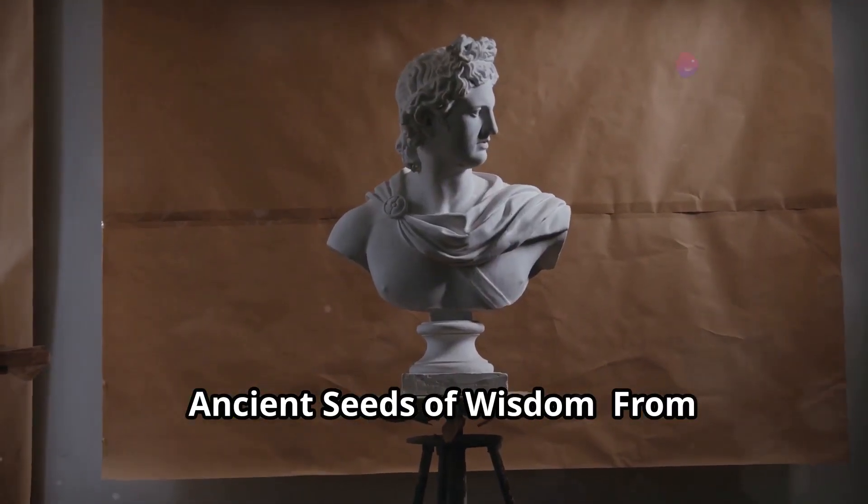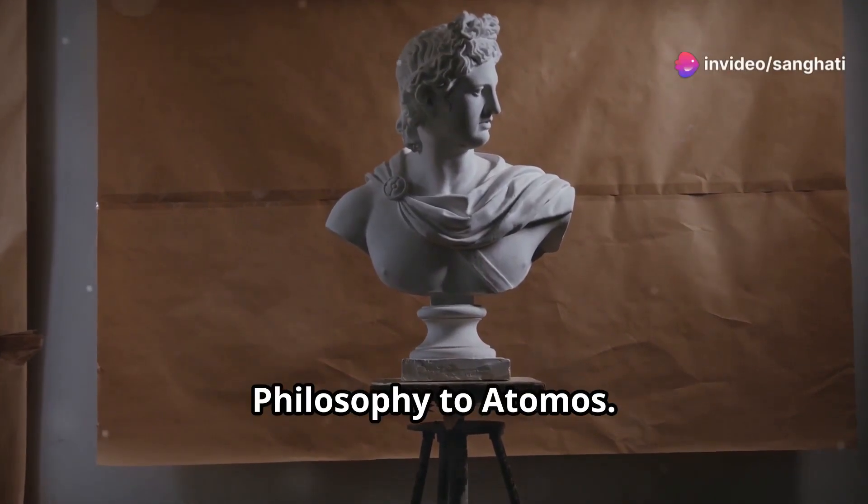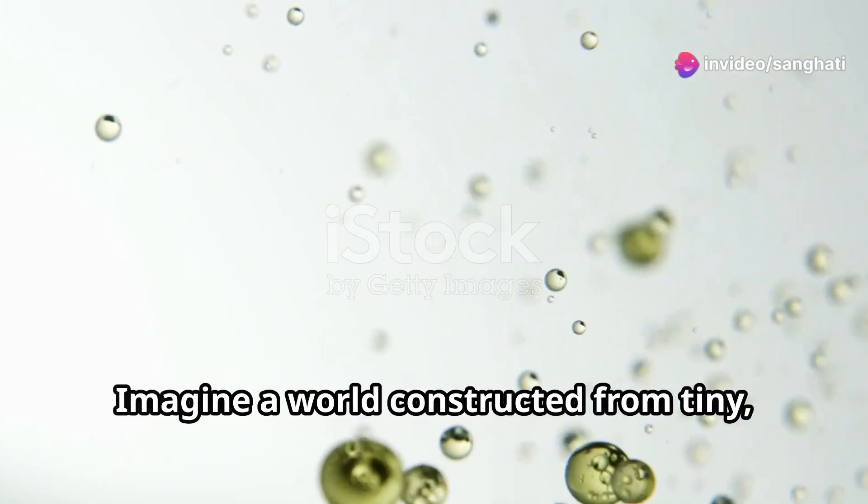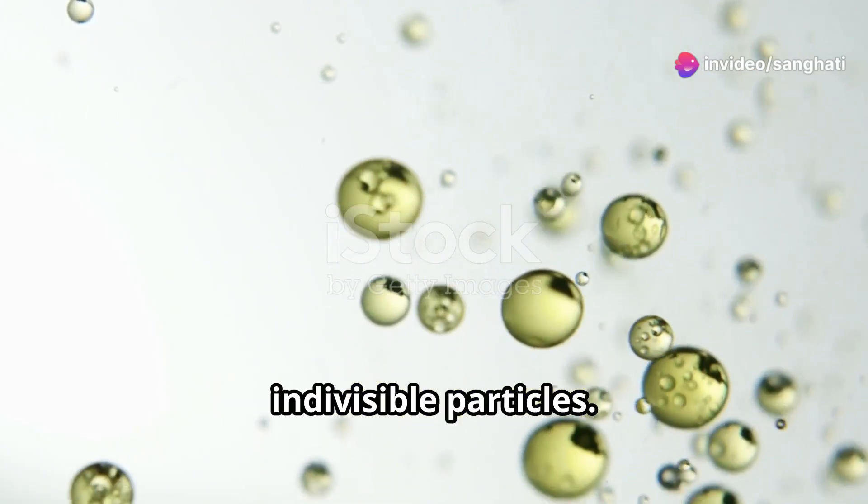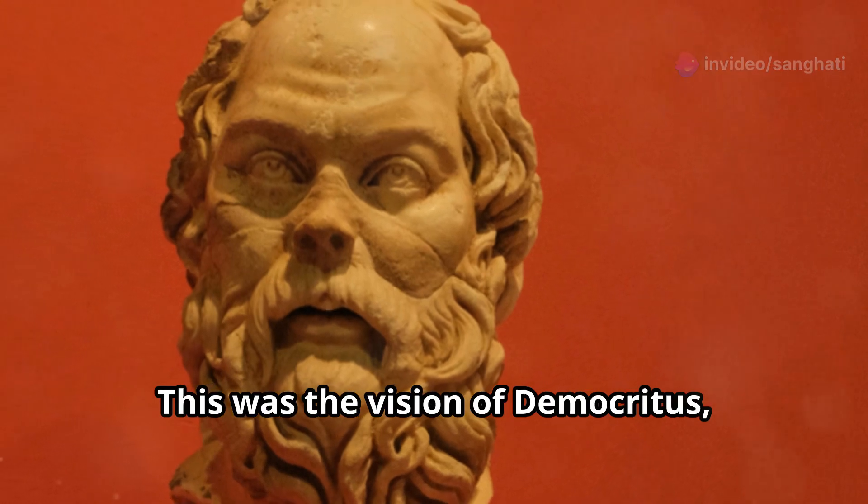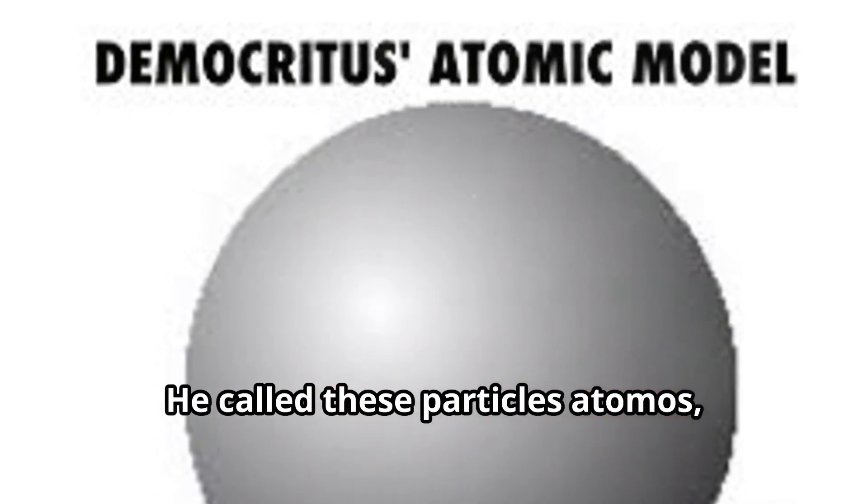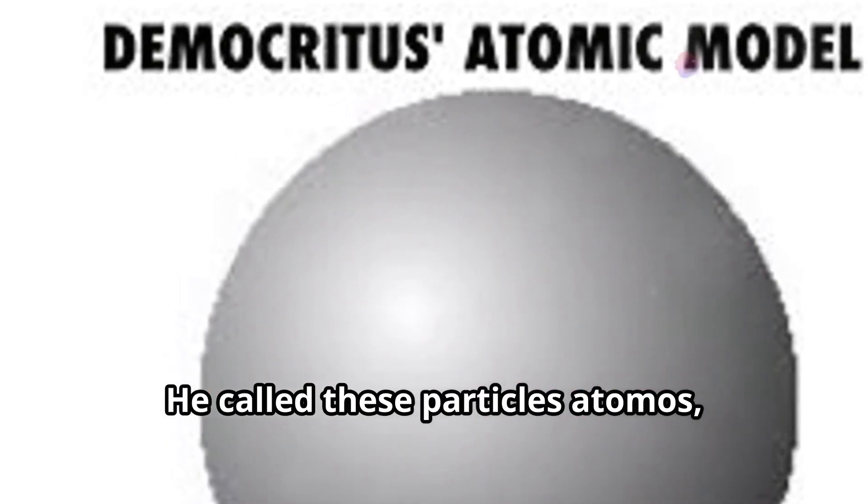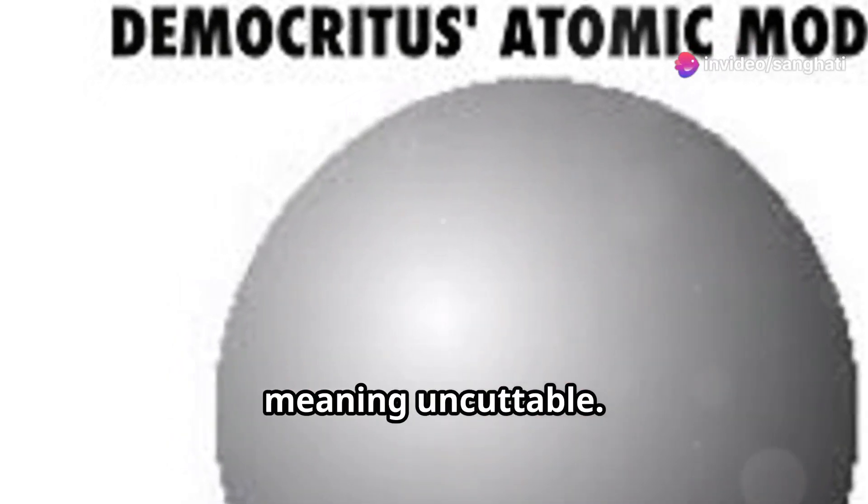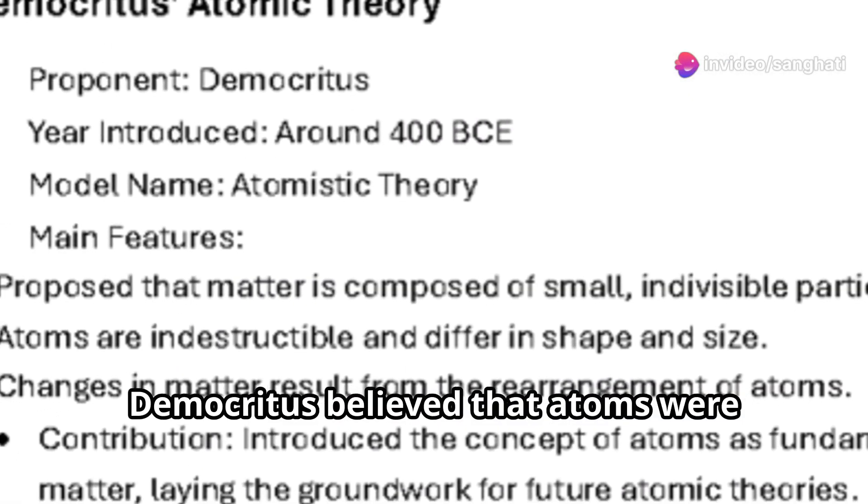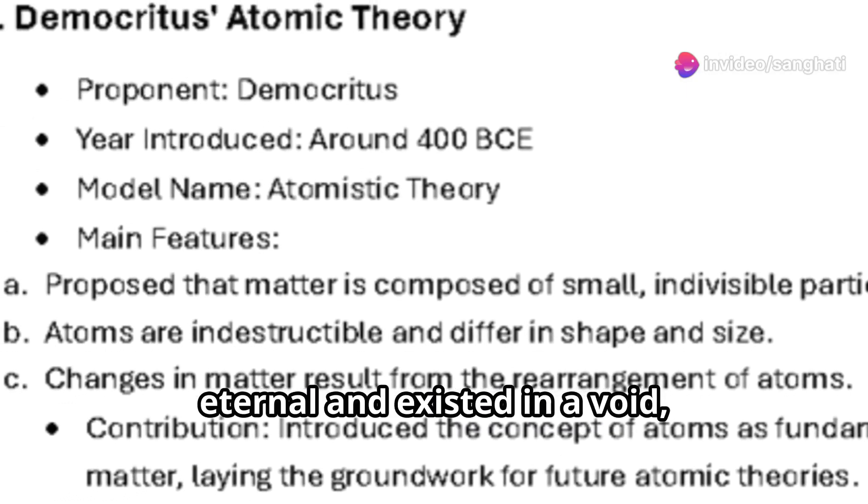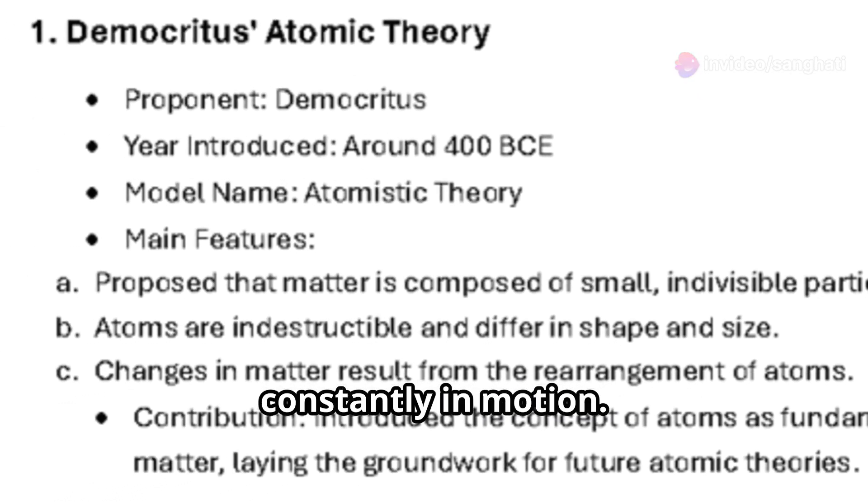Ancient Seeds of Wisdom, From Philosophy to Atomos. Imagine a world constructed from tiny, indivisible particles. This was the vision of Democritus, an ancient Greek philosopher. He called these particles atomos, meaning uncuttable. Democritus believed that atoms were eternal and existed in a void, constantly in motion.